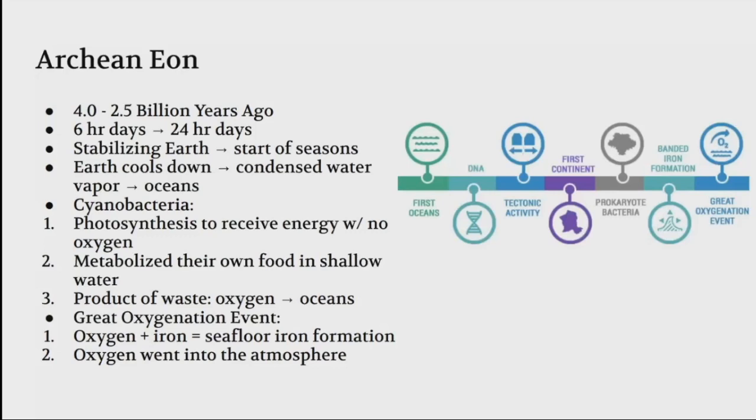Because of the seasons, Earth cools down and this cooling leads to condensed water vapor, which turns into oceans. This was the start of life for single-celled organisms such as cyanobacteria. Cyanobacteria use photosynthesis to receive energy without needing oxygen. They metabolize their own food in shallow waters, and the waste product is oxygen going towards the oceans.